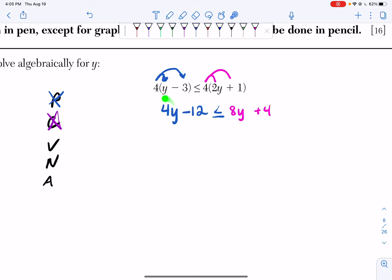So I'm going to move my 4y to the right-hand side of my equation, and remember, to get rid of a positive 4y, I'm going to subtract a 4y. So I'm going to subtract 4y from both sides of my inequality, and I get negative 12 less than or equal to 8y minus 4y is 4y, and then my plus 4.